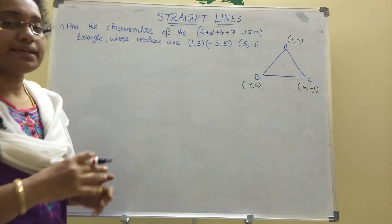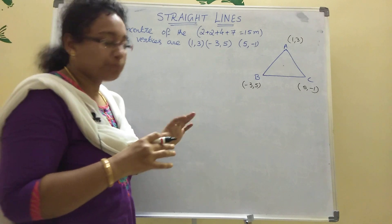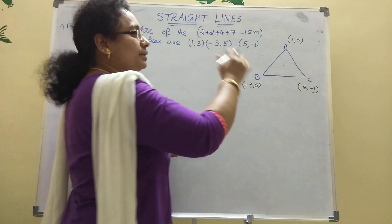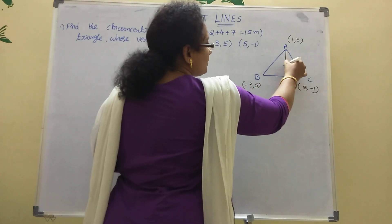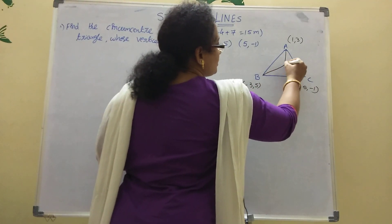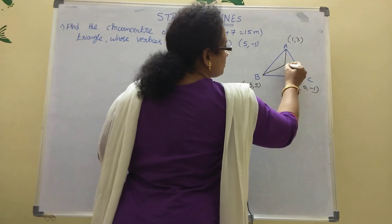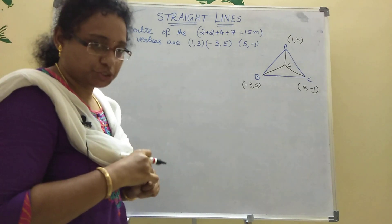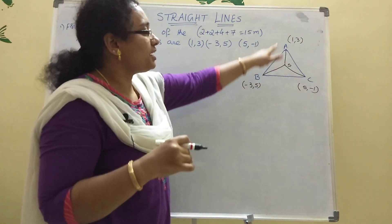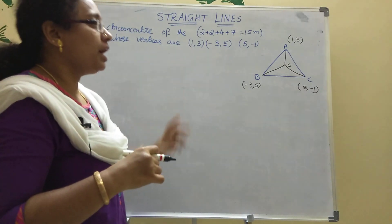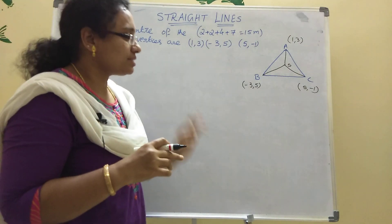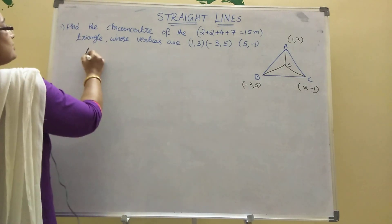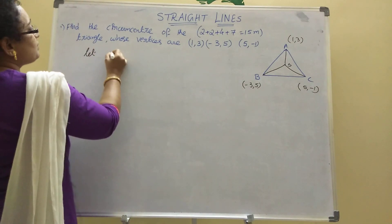What is the circumcenter? The circumcenter is nothing but the point of concurrence of the perpendicular bisectors of the triangle. That intersection point is S, where SA = SB = SC. We need to find that point S, which is the circumcenter.